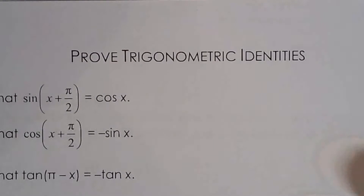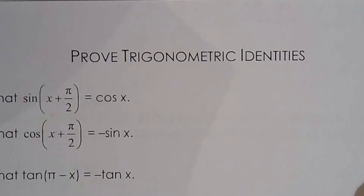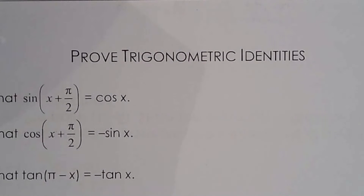For this video we're going to take up the approved trigonometric identities homework sheet. There are 15 questions, but 15 is broken up into A, B, C, D, E, F, and G. Let's look at number one.